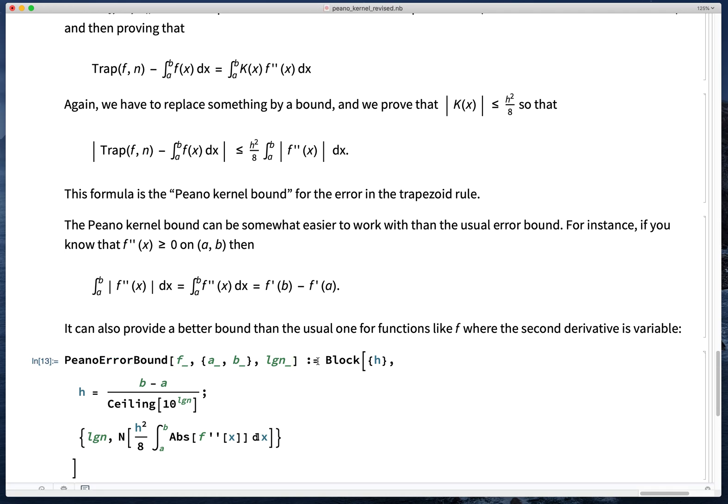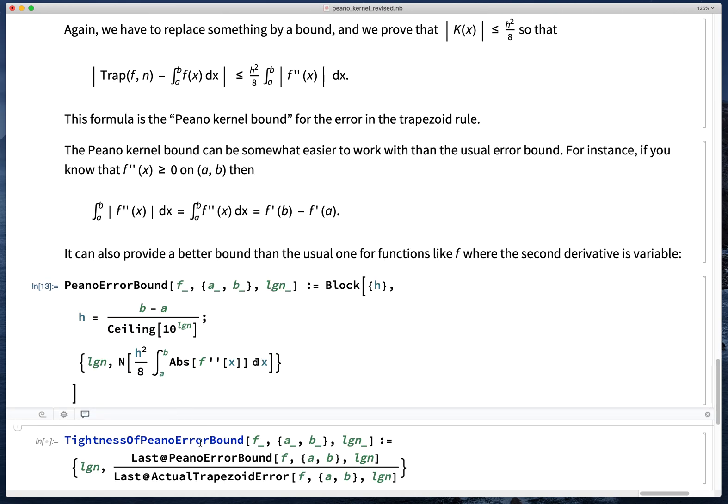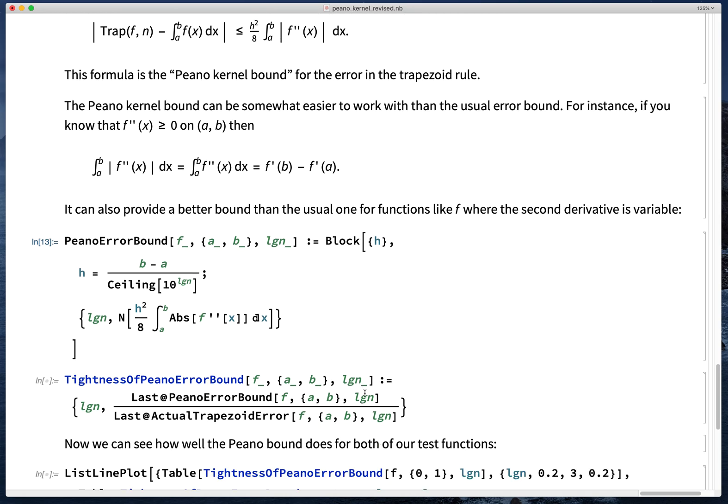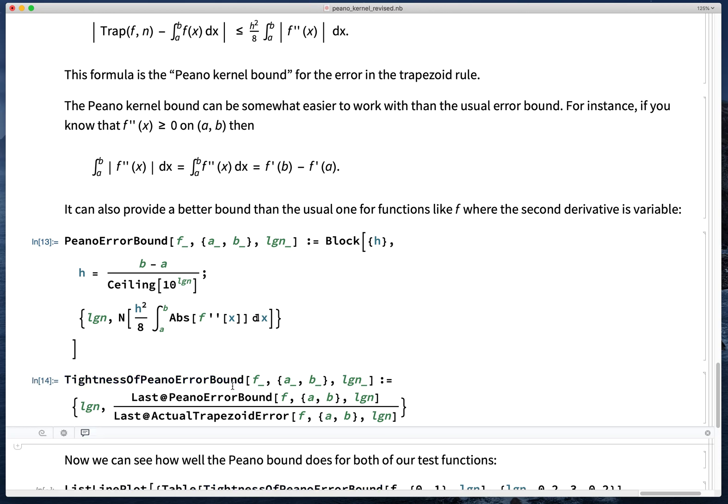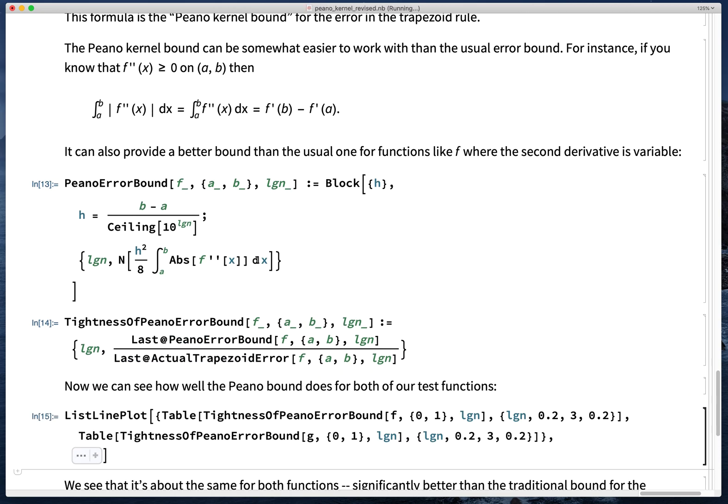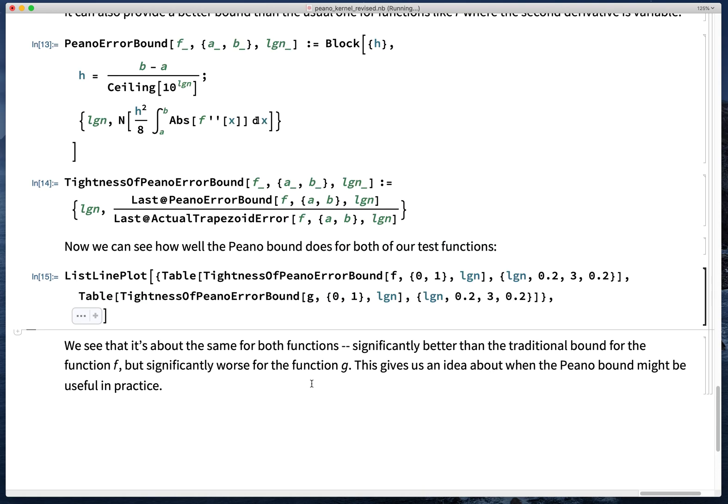So I'll just write down our formula for the Peano kernel error bound. And we'll evaluate its tightness in the same way. We'll take the ratio of the bound to the actual error and see how close it is to 1.